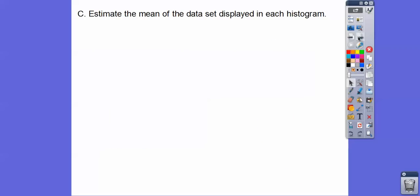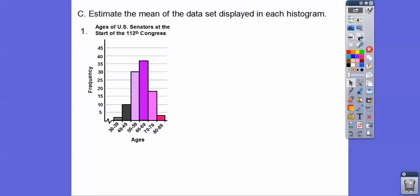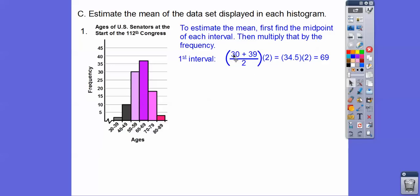So then we get to a piece where it says, estimate the mean of the data set displayed in each histogram. So here's the first one that we did. And so what we do to estimate the mean, we first find the midpoint of each interval and then multiply that by the frequency. So the midpoint would be from 30 to 39 and then divided by 2. If we add 30 plus 39 divided by 2, that would give us the midpoint. That's at 34.5. The midpoint of this one is 44.5, 54.5, 64.5, and so on. And then we multiply that by the frequencies.